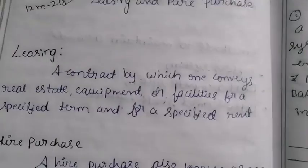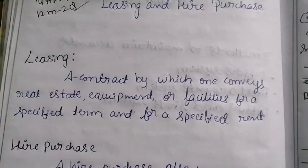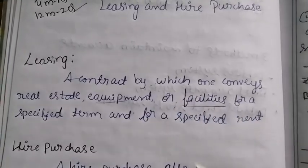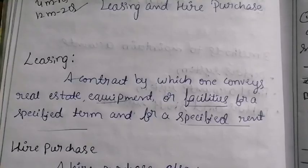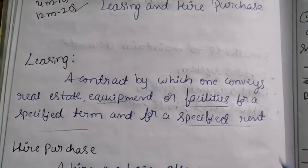Let us see the meaning, that is the theory part. First is leasing: a contract by which one conveys real estate, equipment or facilities for a specified term. Leasing is another contract to use real estate, equipment or facilities for a specified term. Renting on money for a certain time period — renting assets, estate, or houses — that is called leasing.